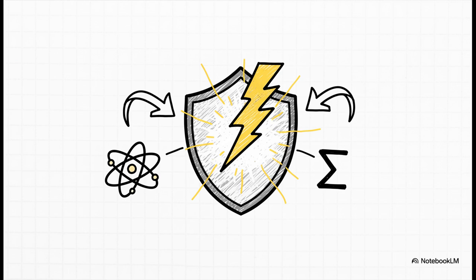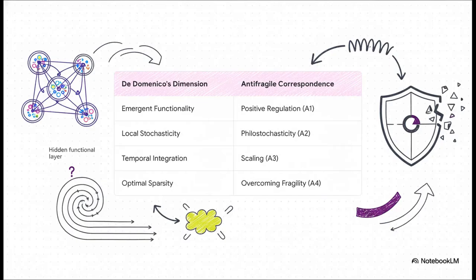It was coined by Nassim Nicholas Taleb, and it's the idea that some systems don't just survive shocks, they actually get stronger from them. For years, it's been a powerful philosophical guide. But now, this work by Domenico provides the hard physics and information theory that explains how anti-fragility actually works under the hood. And what's incredible is how perfectly these two worlds line up. Domenico's emergent functionality, that's Taleb's positive regulation, where a system gets better under stress.